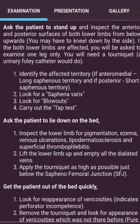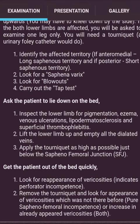Now I will discuss varicose veins. Ask the patient to stand up and inspect the anterior and posterior surface of both lower limbs from below upwards — you may need to kneel down. If both lower limbs are affected, you will be asked to examine one leg only. You will need a tourniquet. First, identify the affected territory: if anteromedial, it is the long saphenous territory; if posterior, it is the short saphenous territory.